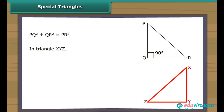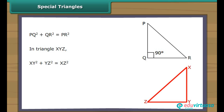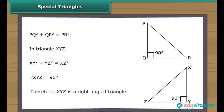In triangle XYZ, it is given that XY² plus YZ² equals XZ². Let us measure angle XYZ of the triangle, which is opposite to the hypotenuse XZ. Angle XYZ equals 90 degrees. Therefore, XYZ is a right-angled triangle.